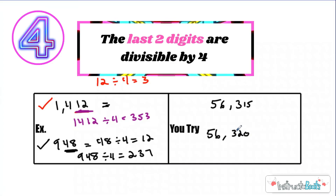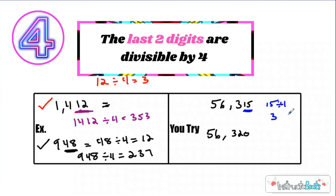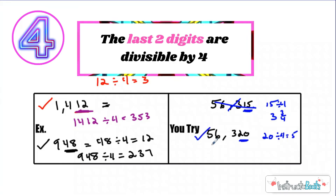Now try these: 56,315 and 56,320. Pause the video and use the rule to check divisibility by 4. For 56,315, the last two digits are 15 — and 15 divided by 4 gives 3 with a remainder of 3, so it is not divisible by 4. For 56,320, the last two digits are 20, and 20 divided by 4 equals 5, so yes — this one is divisible by 4.